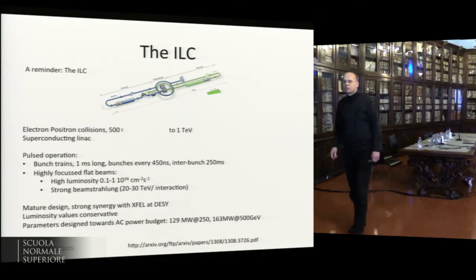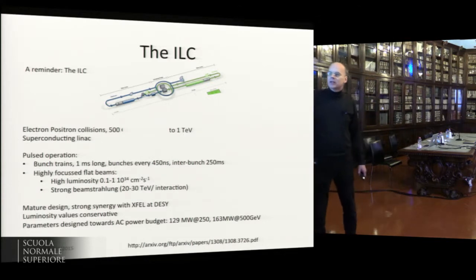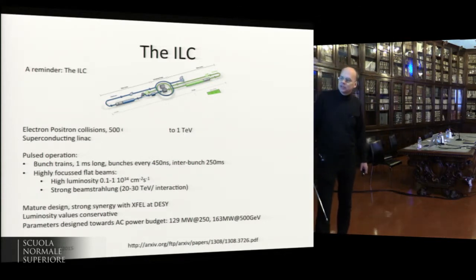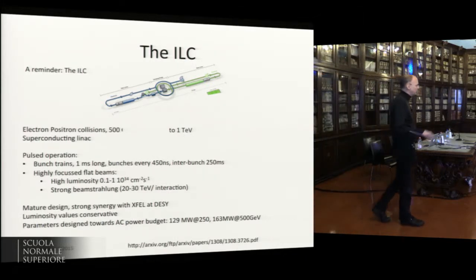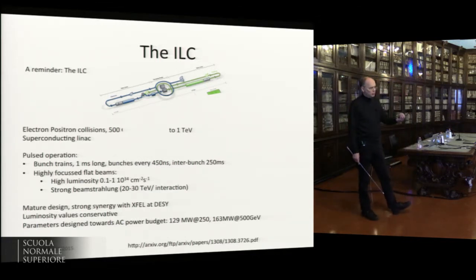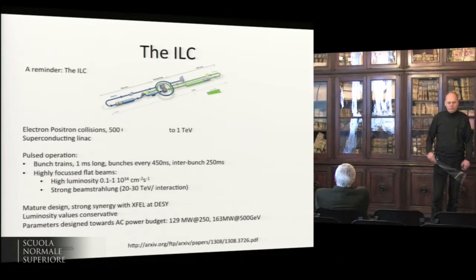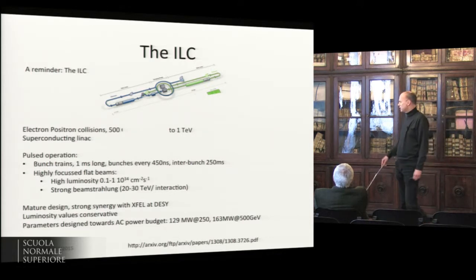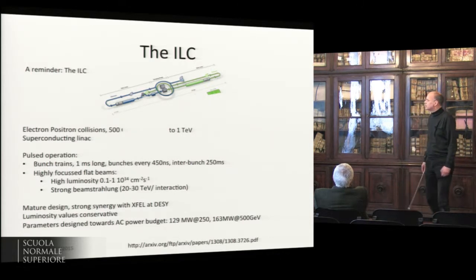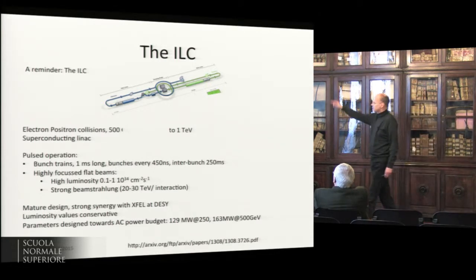To obtain a luminosity in the range of 10^34, the ILC uses highly focused flat beams. As also alluded to for the FCC, the beams are so strongly focused that they start to interact with each other — a phenomenon called beamstrahlung — which has an impact on detector design.